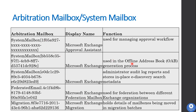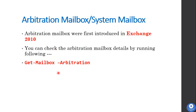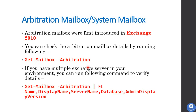If you have any issues related to messaging approval, offline address book generation, or federation between different organizations, you need to first check the details of these arbitration mailboxes. When you deploy a new Exchange Server 2013 or 2016, five arbitration mailboxes are created by default. These arbitration mailboxes were first introduced in Exchange Server 2010. You can check arbitration mailbox details by running the command: Get-Mailbox -Arbitration. If you have multiple Exchange servers, you can run the following command to verify arbitration mailboxes created per server.